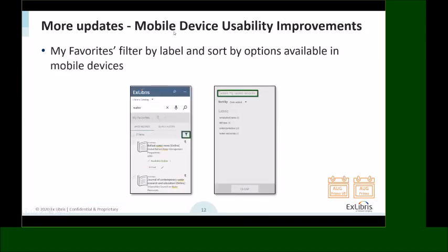We also improved the mobile experience: users on mobile devices previously could not use My Favorites to filter labels. We added a filter icon in the same look and feel as 'Tweak My Results' — now called 'Tweak My Saved Records' on mobile — allowing users to filter by label and sort favorites. This is available in both Primo VE August release and Primo.